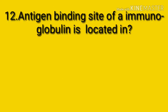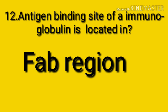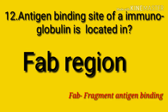Question number twelve: antigen binding sites of an immunoglobulin are located in which region? The answer is the FAB region of the antibody. FAB stands for Fragment Antigen Binding. The FAB region is the part of an antibody that binds to the antigen, so the antigen binding site of an immunoglobulin is located in the FAB region.